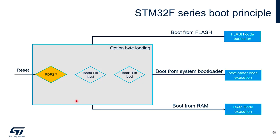This is the general boot principle of the STM32 F series. When RDP level 2 is not set, the boot zero pin level first decides whether the system will boot from internal flash. If it is at a low level, the system boots from user flash. Otherwise, the boot 1 pin level further determines whether the system will boot from internal RAM or the system bootloader.